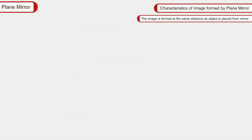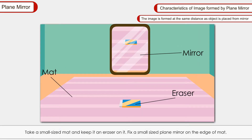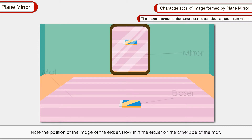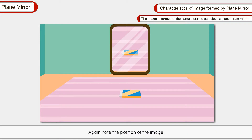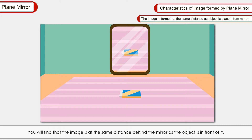The image is formed at the same distance from the mirror as the object is placed in front of it. You can verify this by placing a small mat with an eraser on it and fixing a small plane mirror on the edge. Note the image of the eraser, then shift the eraser to different positions. You will find that the image is always at the same distance behind the mirror as the object is in front of it.